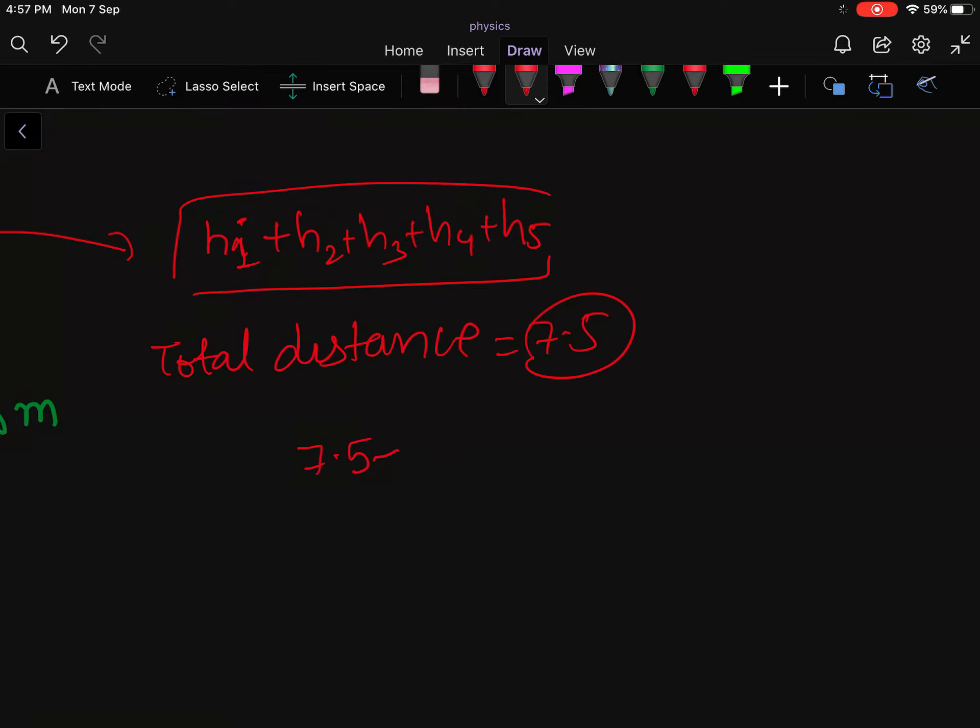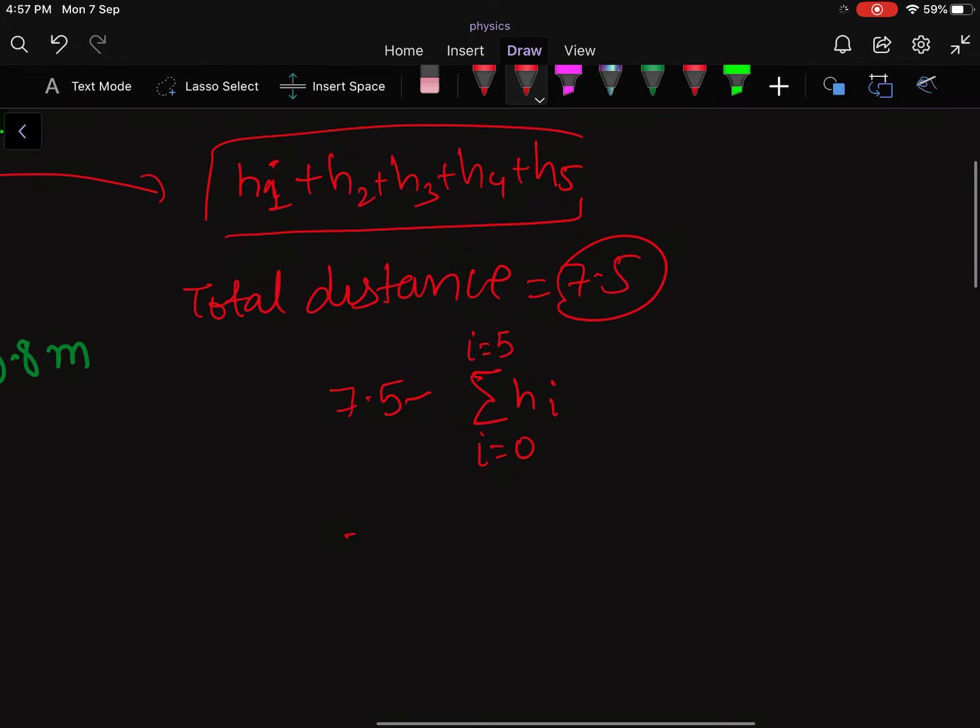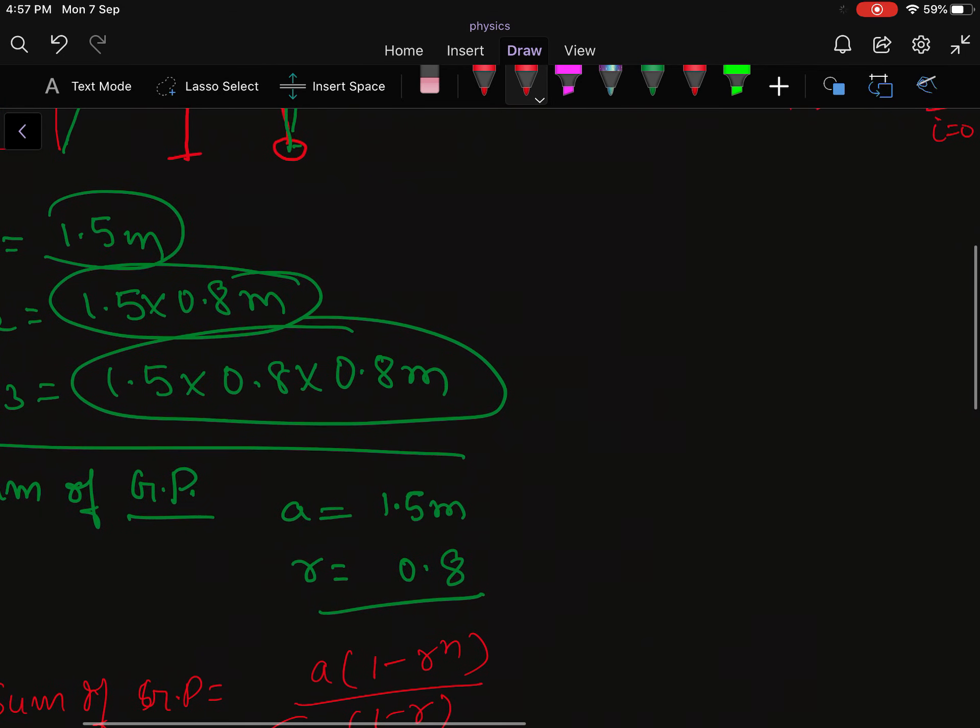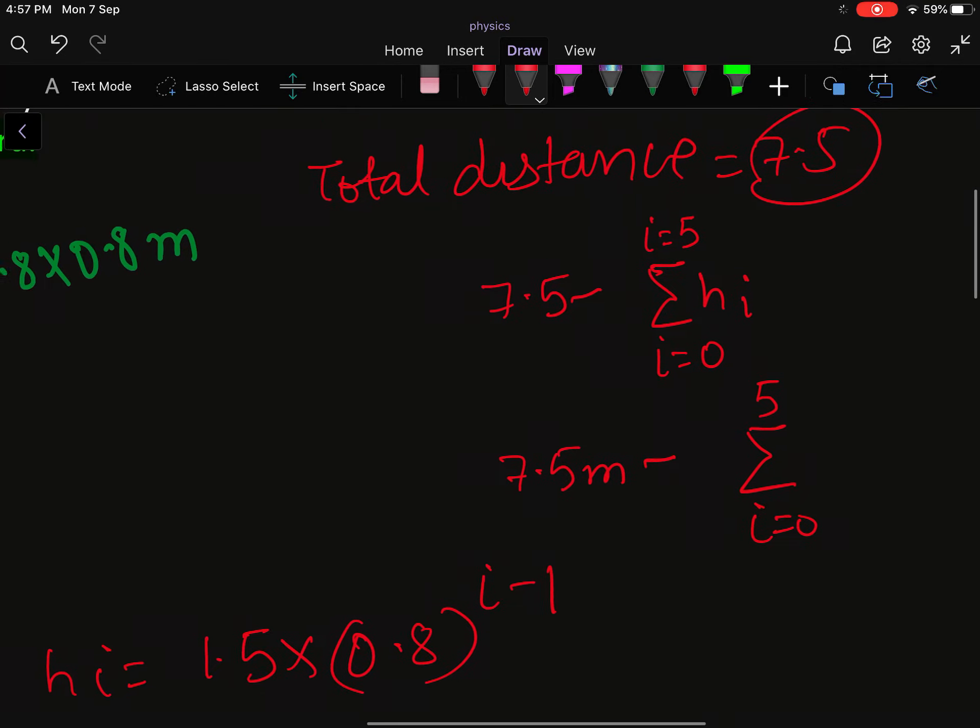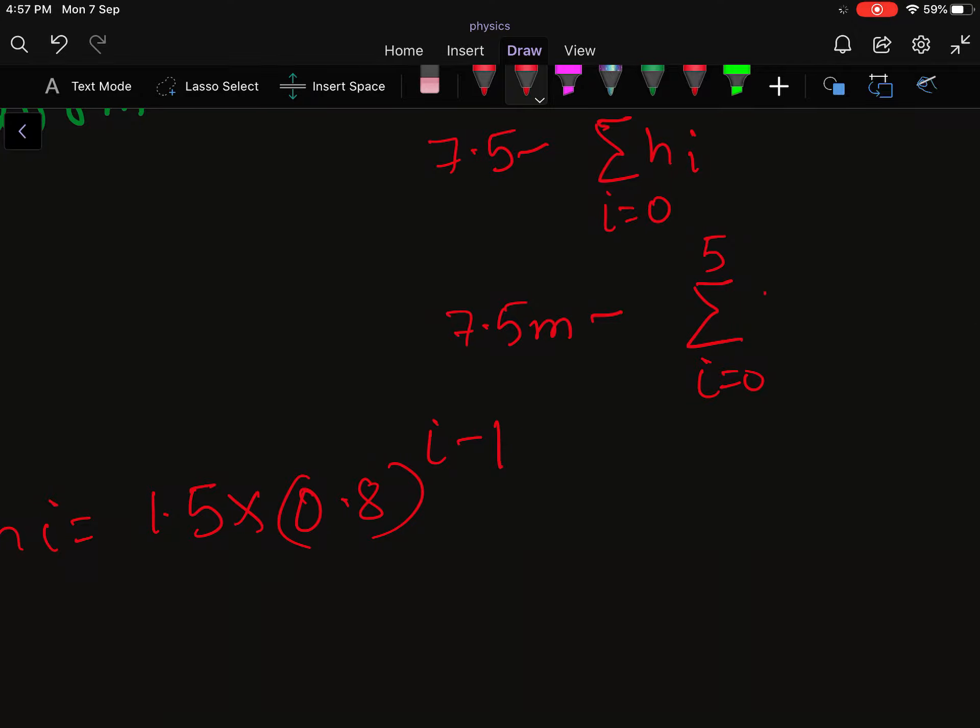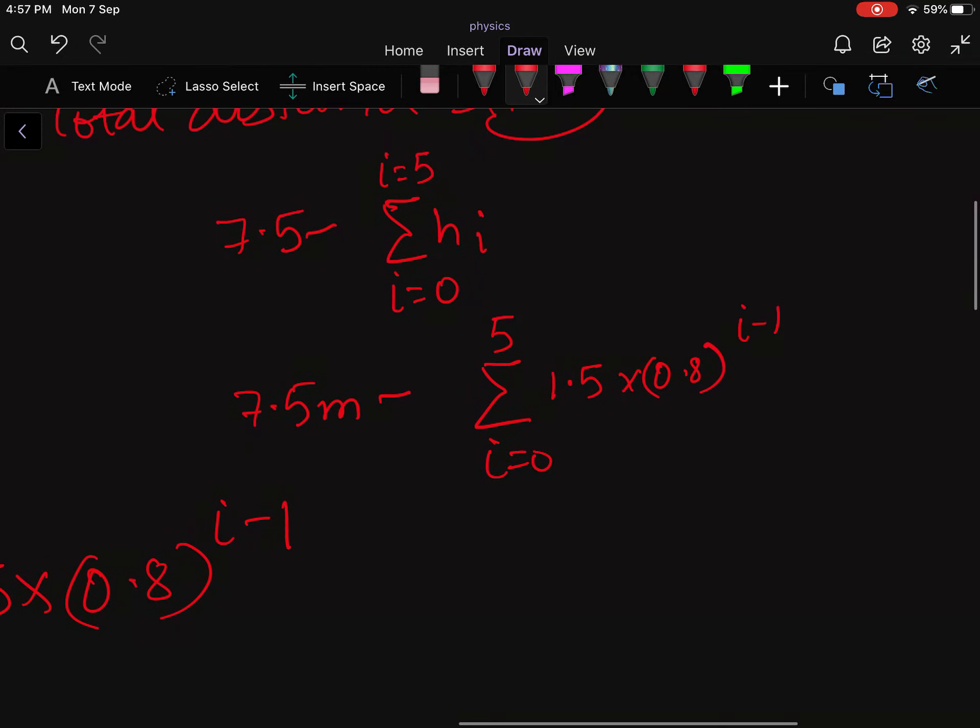Total distance minus distance till 5. So you can take the sum from i = 0 to i = 5 of h_i. So it will be 7.5 meters minus the sum from i = 0 to i = 5. And you can write h_i - the general term h_i will be 1.5 × 0.8^(i-1). So it will be 7.5 meters minus the sum from i = 0 to 5 of 1.5 × 0.8^(i-1) meters. This will be the answer.